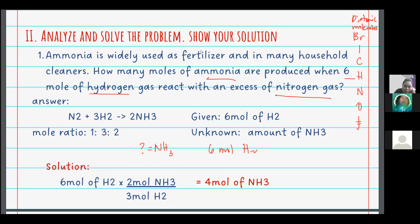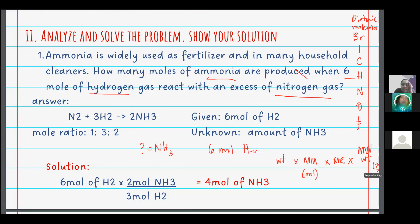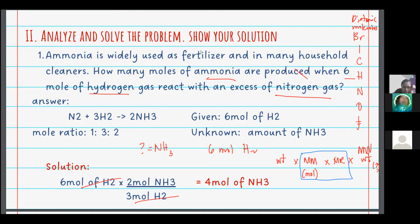Remember our pattern for stoichiometry: multiply by the molar mass to convert to moles, then by the mole ratio, then by the molecular weight of the unknown. But since the given is in moles and we are looking for the number of moles, we only need the mole ratio part. So 6 moles of H2 multiplied by the mole ratio — 2 moles of ammonia over 3 moles of H2 — gives us 6 times 2 equals 12, divided by 3, which is 4 moles of ammonia. The answer is correct.